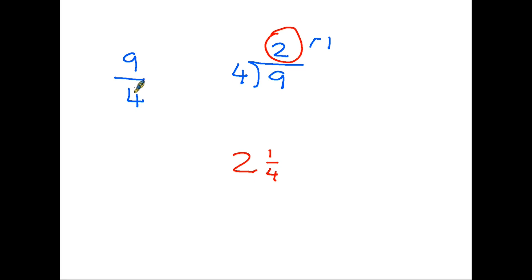Take the top number, divide it by the bottom. That tells you how many 4s there are in 9, or how many whole numbers there are. And whatever is remaining becomes the final fraction. And of course, we are working in quarters here. Therefore, it stays in quarters there.